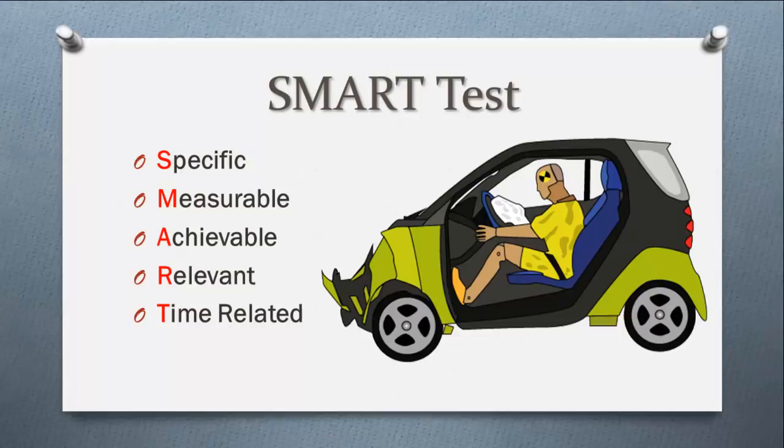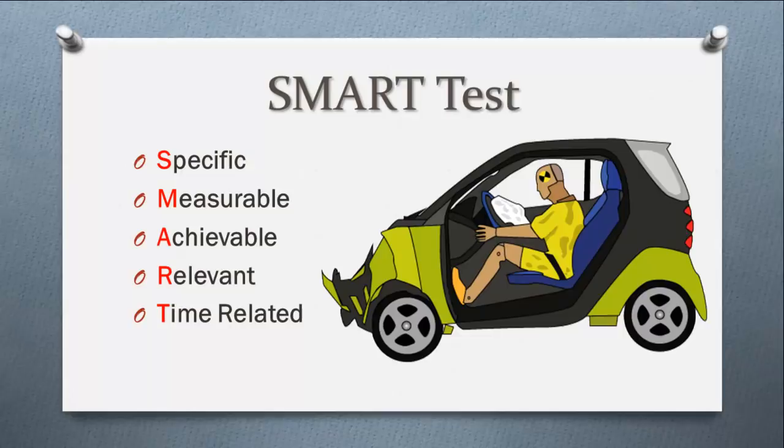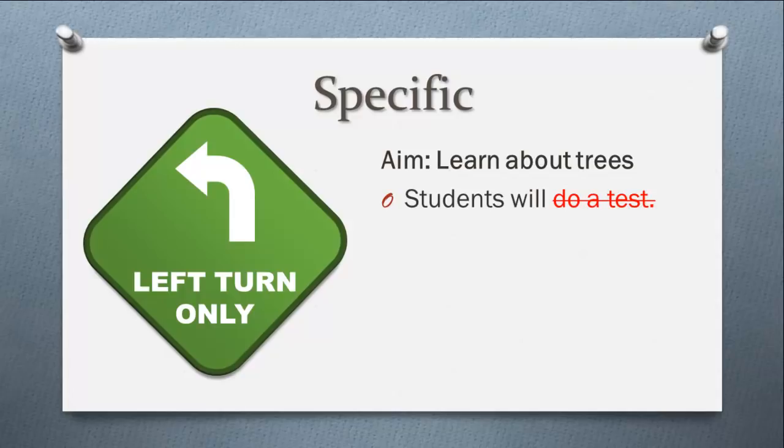So let's look at making a specific objective. If our aim was to learn about trees, we might write an objective which says students will do a test. Do a test is not specific and another tutor covering your lesson wouldn't know what the test was supposed to be about. It is also something students will do, not what they will be learning. It is important that your objectives deal with learning. So we could change this to students will describe the process involved in photosynthesis. This is much clearer and also shows what you expect the student to learn.